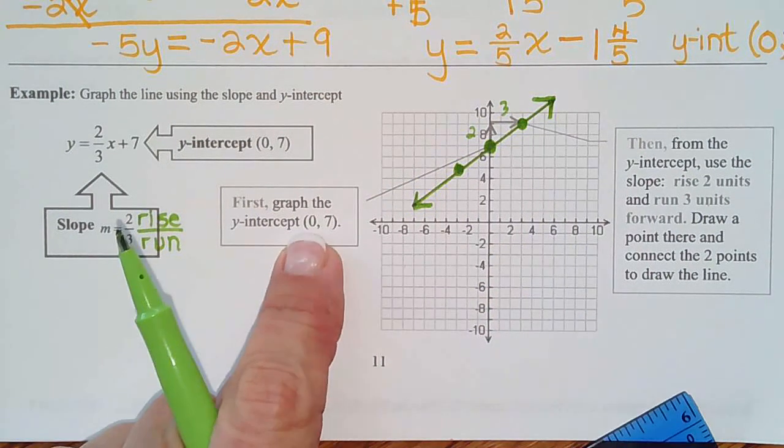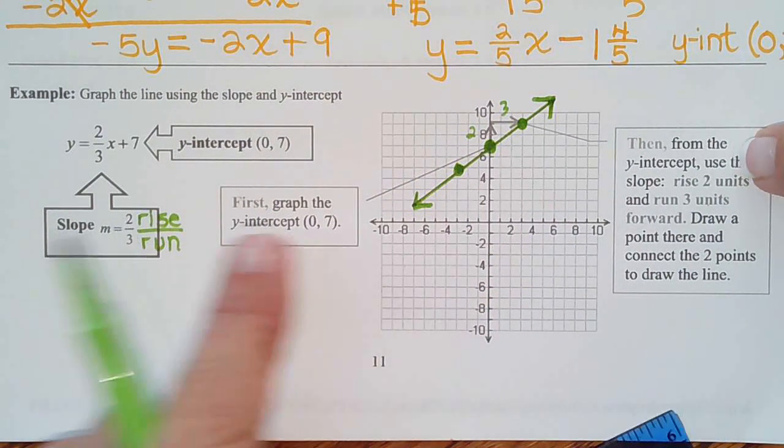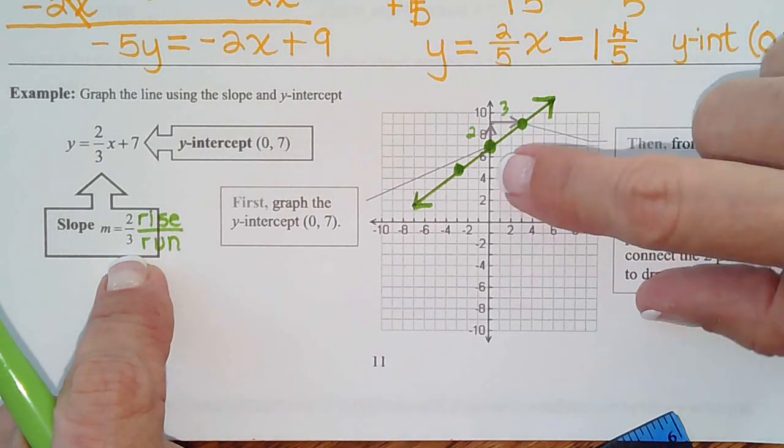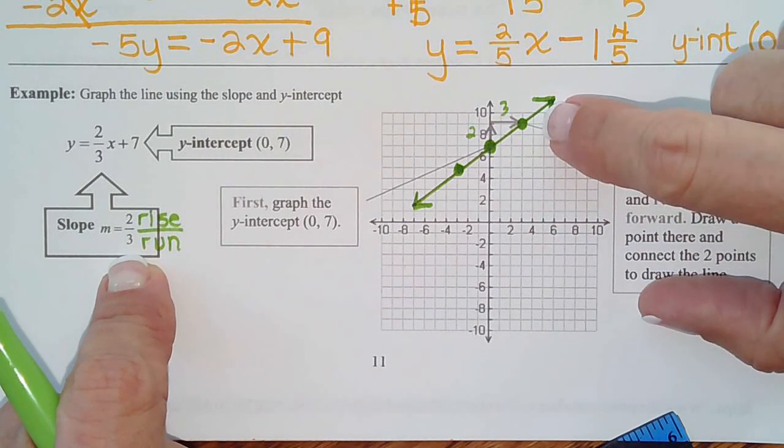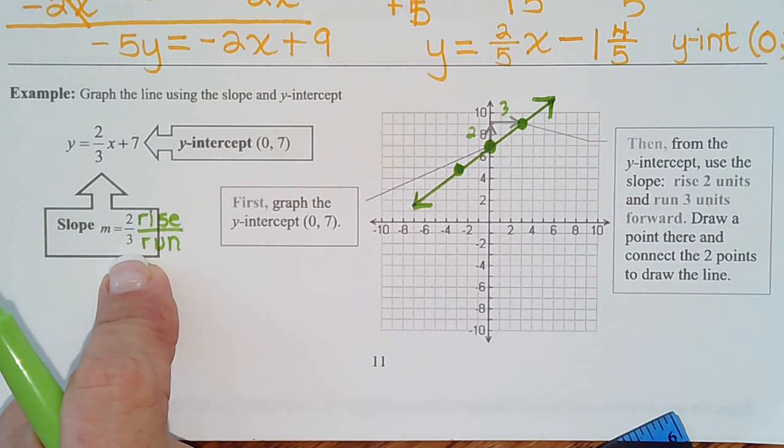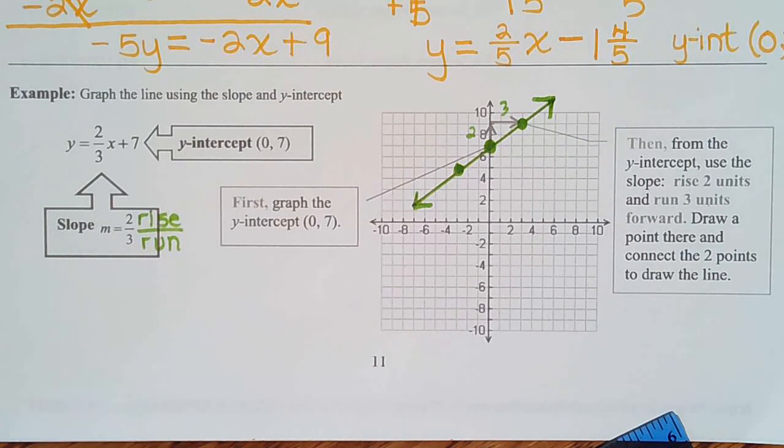So, y-intercept first. And then from the y-intercept, you do your rise and your run to get your additional points. Pretty easy stuff, huh?